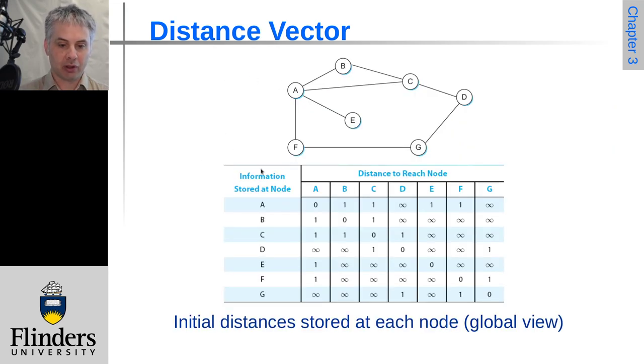So if we have a look at this example, from a starting point, each node can work out whether it has a zero cost, i.e. to get to itself. So A has a cost of zero to reach A.